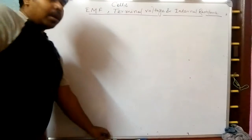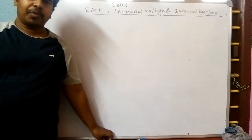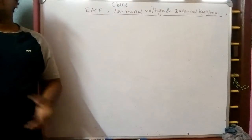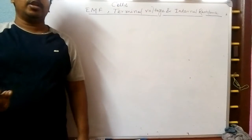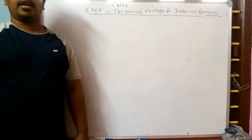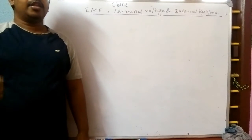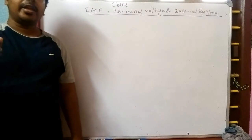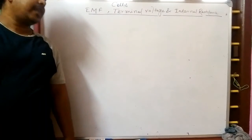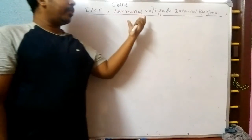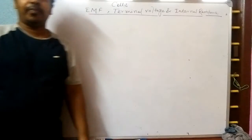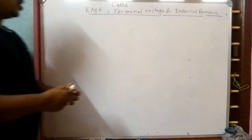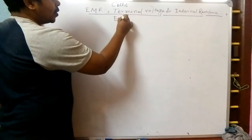Hi dear students, we have again come with a new video of Class 12 where we want to learn about the cell, its EMF, terminal voltage, and internal resistance. We have started current electricity, and to flow current through a circuit we need a constant potential difference, which is generally supplied by cells. First, let's come to EMF, whose full form is electromotive force.